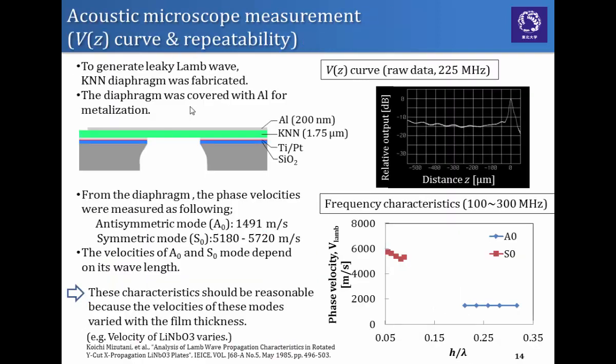To generate the leaky wave, we fabricated this KNN diaphragm by using MicroMEMS technologies. In this research, we covered the KNN with aluminum on top side. This is the raw data of the V(Z) curve at 225 megahertz.